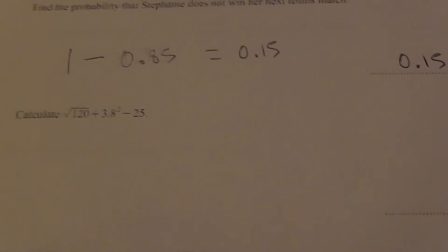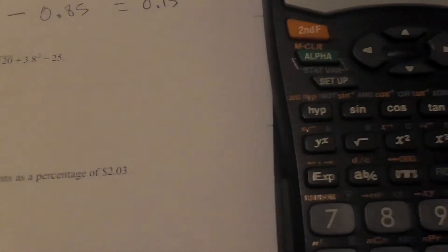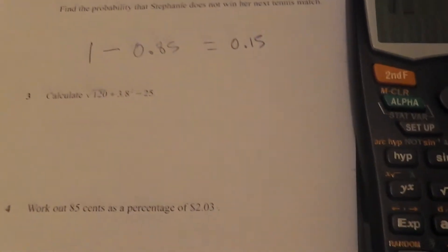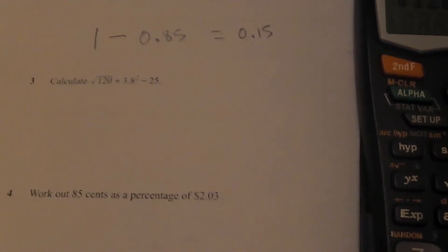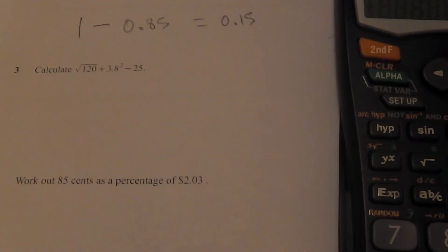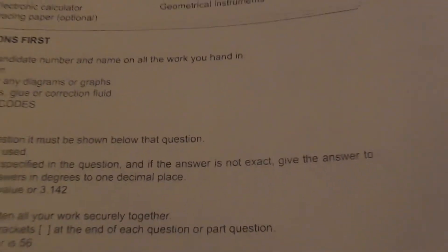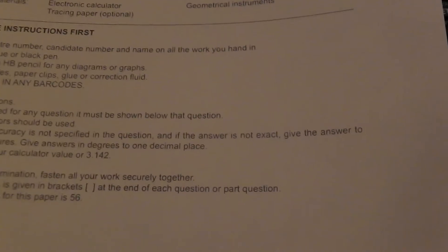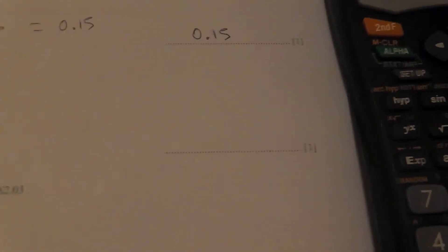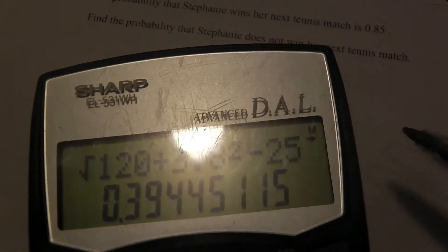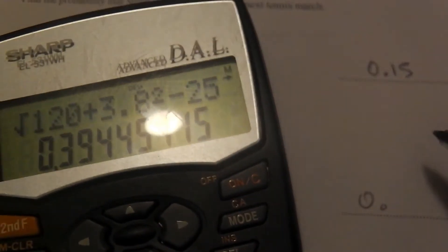The next one — just punch into your calculator: square root of 120, plus 3.8 squared, minus 2.5, minus 25. Going back to the first page of instructions: if the degree of accuracy is not specified in the question and the answer is not exact, give the answer to three significant figures. The degree is not stated here, so we use three significant figures. The result is 0.3844, which rounds to 0.384.